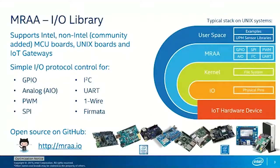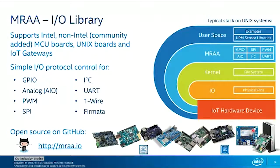Moving along, we have a couple of Atom boards: the Intel Edison, which is pretty popular, and the Up and Up Squared boards. The Up board is already available; the Up Squared is on pre-order and should become available soon. We also have the Mino board, the Intel Joule, which is a fairly new Intel board, and then some gateway devices.